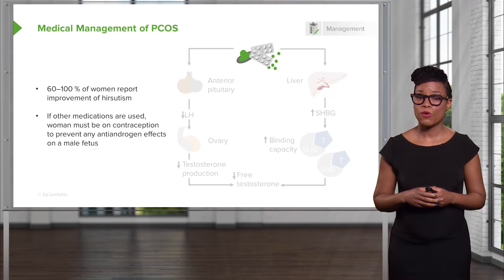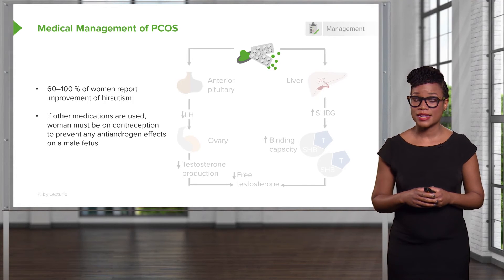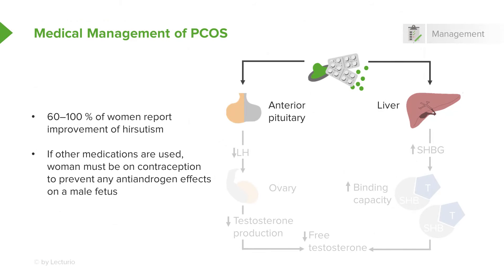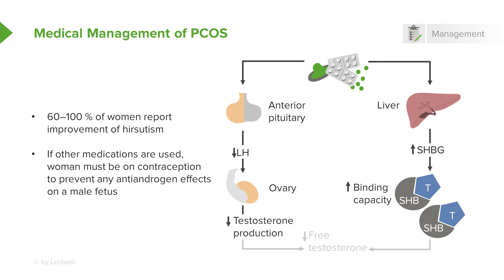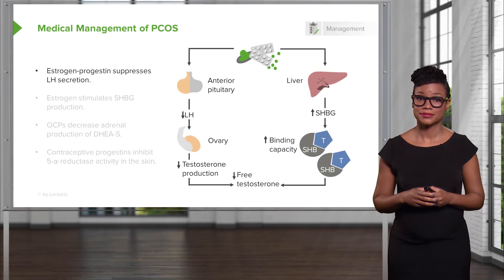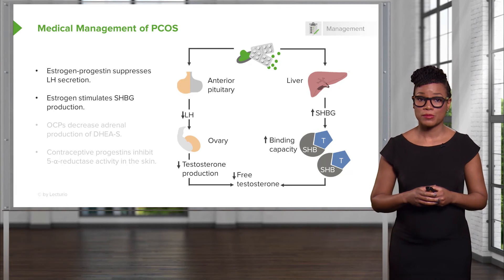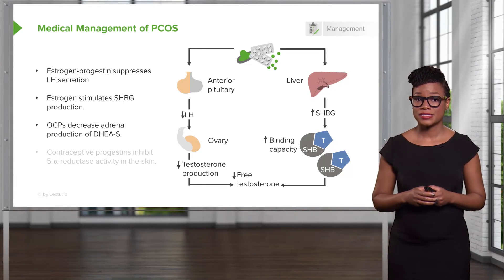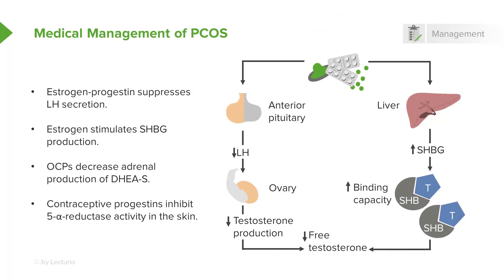If other medications are used, a woman must be on contraception to prevent any antiandrogen effects in a male fetus. Oral contraceptive pills decrease LH secretion from the anterior pituitary, resulting in less LH stimulation of the theca cells in the ovary, which ultimately leads to decreased testosterone production and less free testosterone. Additionally, the estrogen in the pill increases sex hormone binding globulin, which binds more free testosterone. In addition to suppressing LH secretion, estrogen stimulates sex hormone binding globulin production. Oral contraceptive pills also decrease adrenal production of DHEAS, and progestins in contraceptives actually inhibit 5-alpha-reductase activity in the skin.